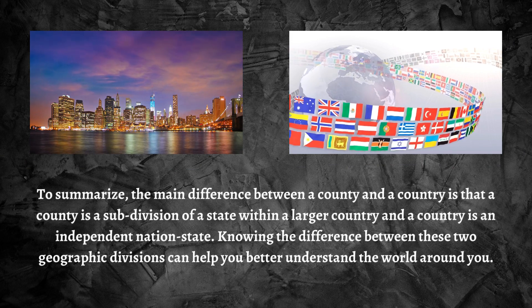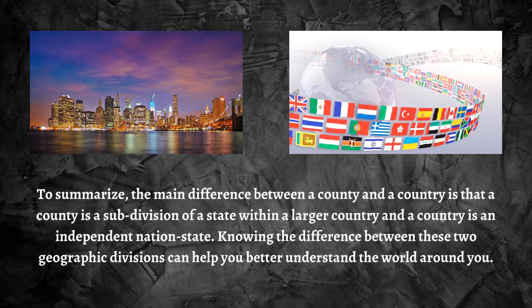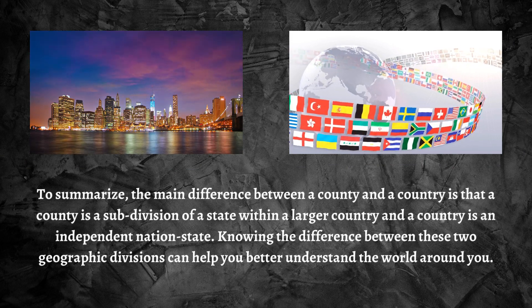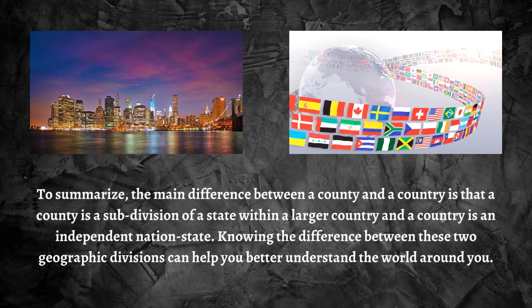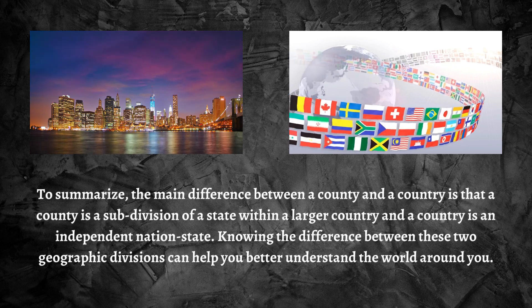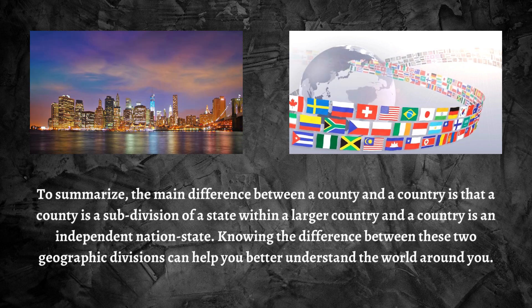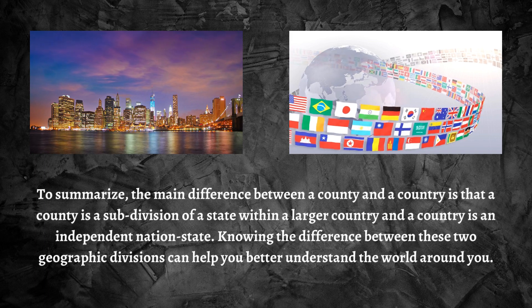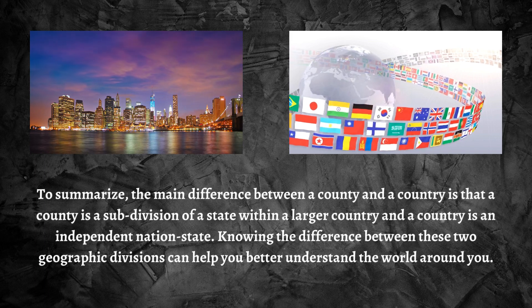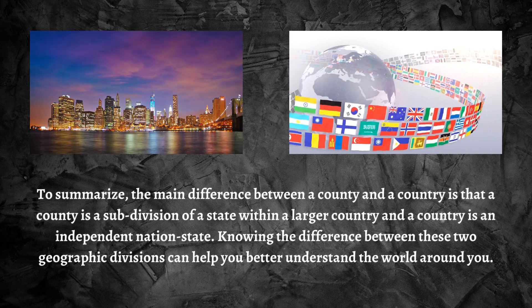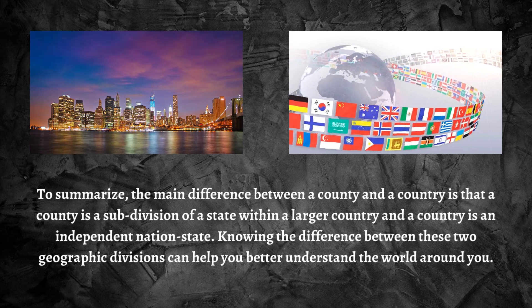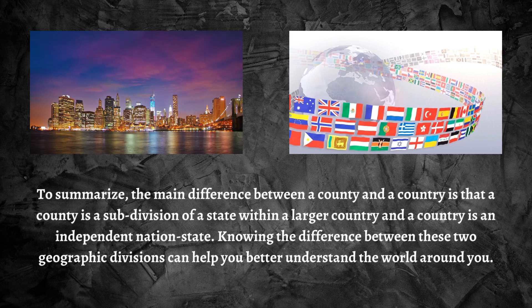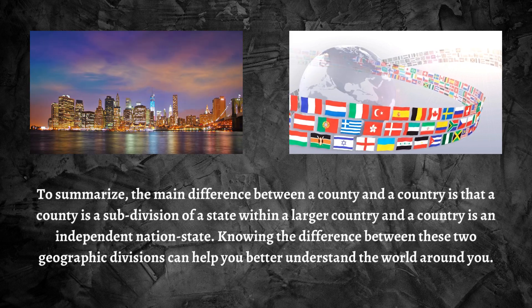To summarize, the main difference between a county and a country is that a county is a subdivision of a state within a larger country, and a country is an independent nation-state. Knowing the difference between these two geographic divisions can help you better understand the world around you.